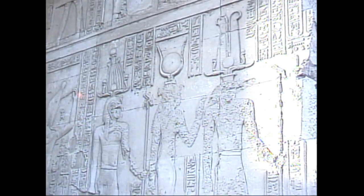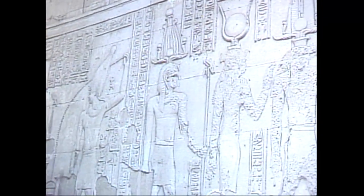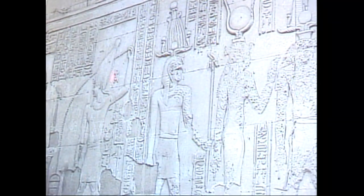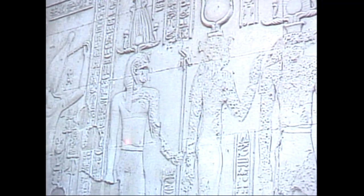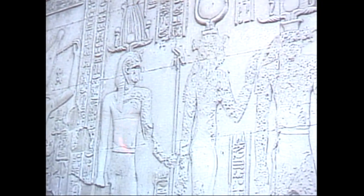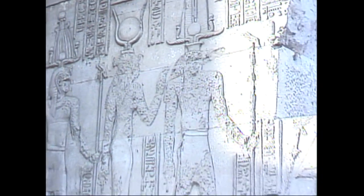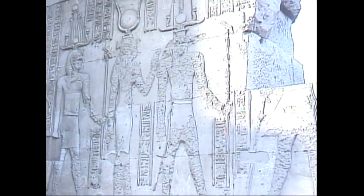We saw the ceremony where the pharaoh was throwing the seeds. When we move to the next panel we see the pharaoh again in a procession behind Het-Heru, holding the Was scepter.